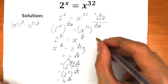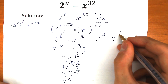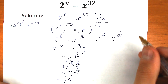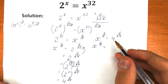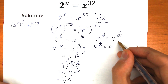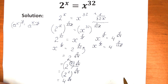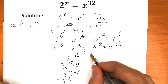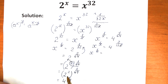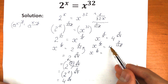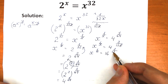Let's rewrite our expression: x to the power 1 over x equal to 4 to the power 1 over 64. Now let's do the same thing again — rewrite as 4 to the power 2 over 128. We take 4 squared, which is 16, raised to the power 1 over 128. So we have x to the power 1 over x equal to 16 to the power 1 over 128.